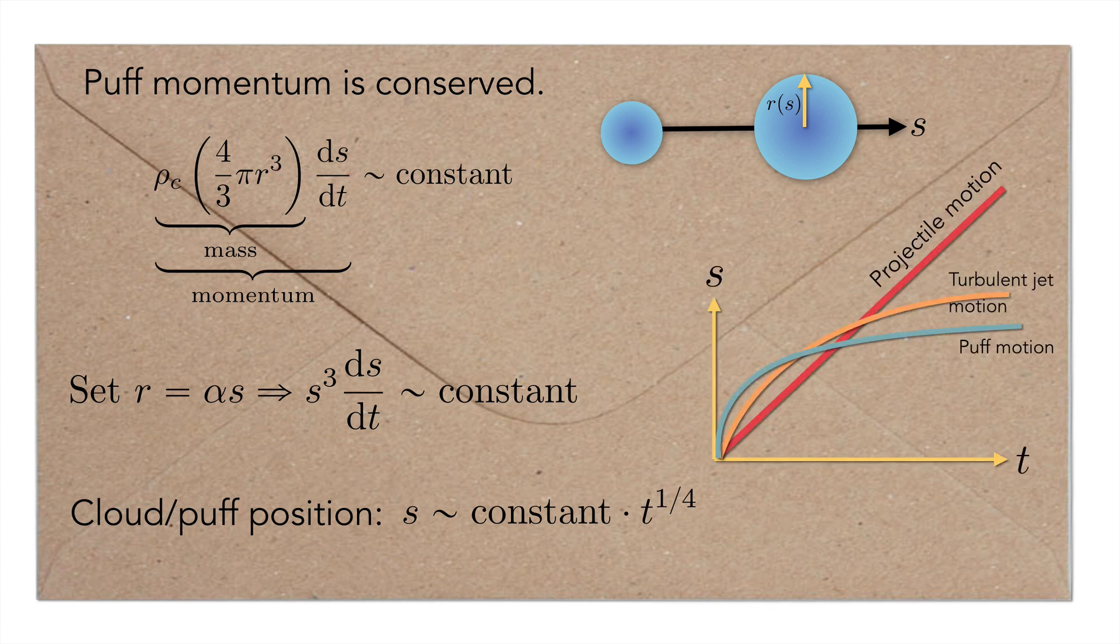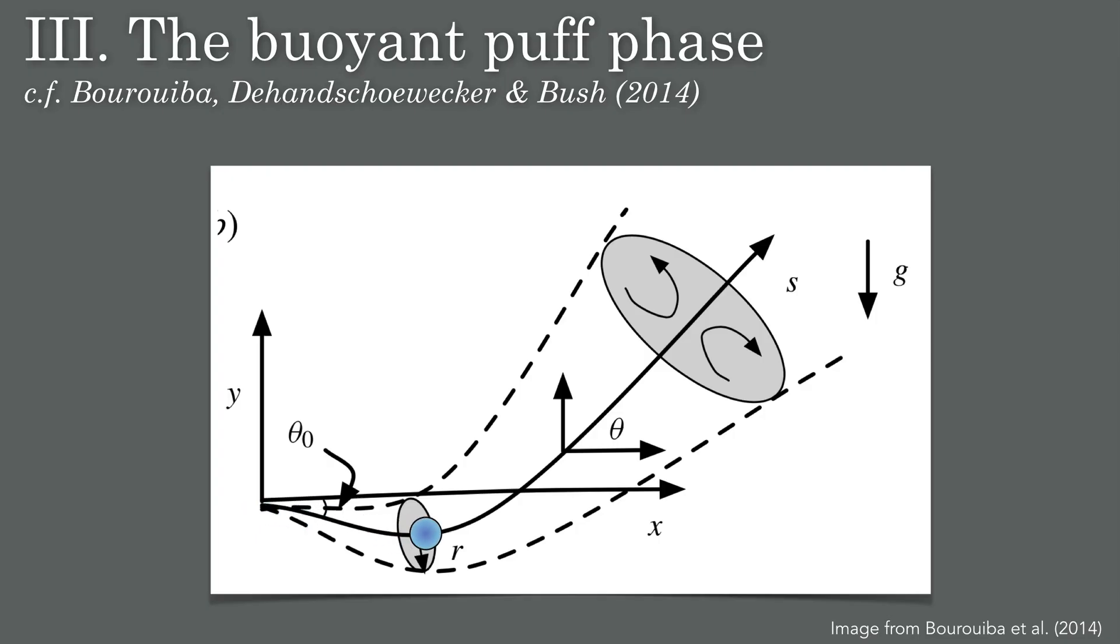Visualize on the diagram: the puff motion is slower than the jet motion. We've thus established the first two phases, and now we come to the third and perhaps the most interesting phase of modeling our sneeze.